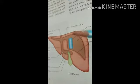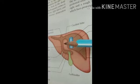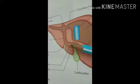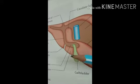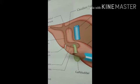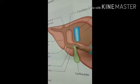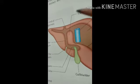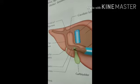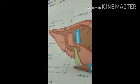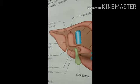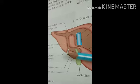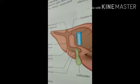Just below the porta hepatis, the caudate lobe is connected to the right lobe by the caudate process. The quadrate lobe is situated on the inferior surface and is rectangular in shape. It is bounded anteriorly by the inferior border, posteriorly by the porta hepatis, on the right by the fossa for the gallbladder, and on the left by the fissure for the ligamentum teres.